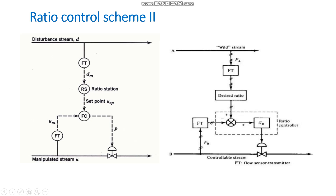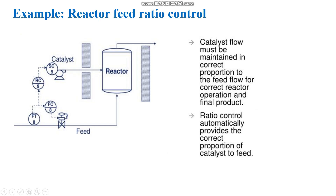The manipulated stream — the controllable stream — is measured by another flow meter. These two measured values are compared in the flow controller, and the output of the flow controller goes to the control valve, which increases or decreases the flow accordingly. This is the controllable stream and the wild stream in scheme two. This is ratio control scheme two.